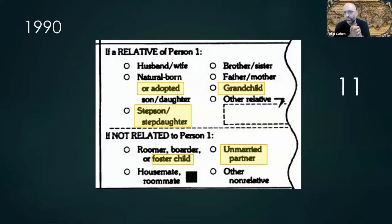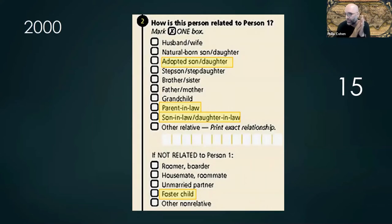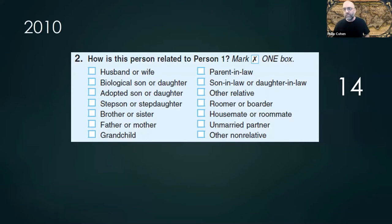By 1990, the images are getting less blurry. They now identify adopted children, and natural-born, stepson and daughter are a new category. Grandchild is a new category. They now separate out unmarried partner as a separate category from housemate/roommate, and foster child is there — up to 11 categories in 1990. By 2000, up to 15 categories: adopted son and daughter are separate, parent-in-law, son and daughter-in-law, and foster child is its own category. In 2010 we actually lost a category, but the same framework — these go in order of first related, then unrelated: husband, wife, biological, adopted, stepfather, father, grandchild, parent-in-law, son-in-law, other relative — then a line and you get to the unrelated: roommate, housemate, unmarried partner.